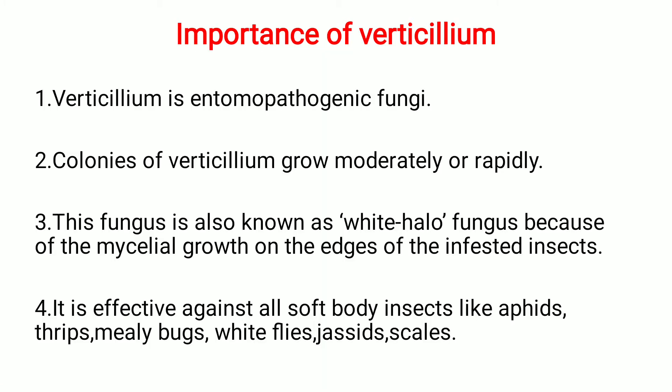Verticillium is an entomopathogenic fungus, meaning it is a fungus that controls insects. The colonies of Verticillium grow moderately or rapidly. If favorable or moist conditions arise, Verticillium multiplies rapidly. It is known as the white halo fungus because of the mycelial growth on the edge of the infected insect.